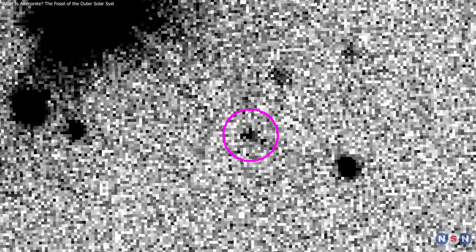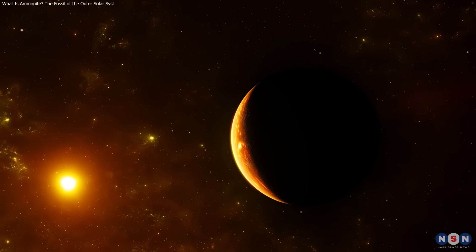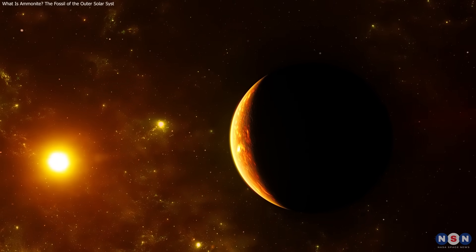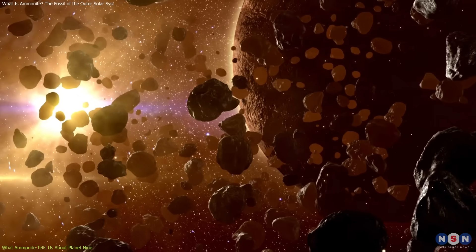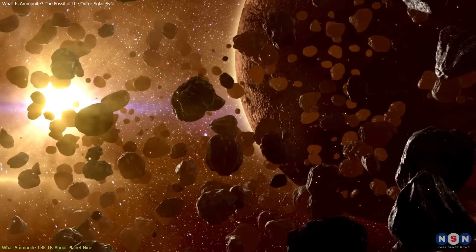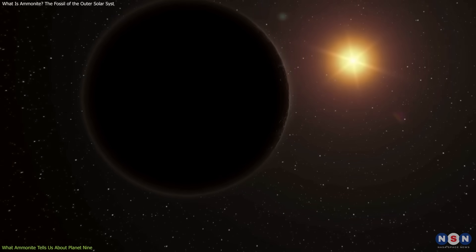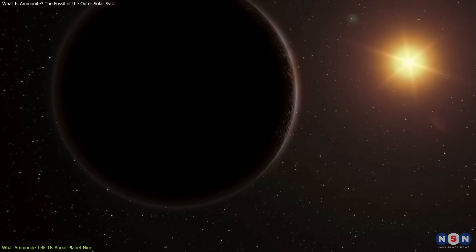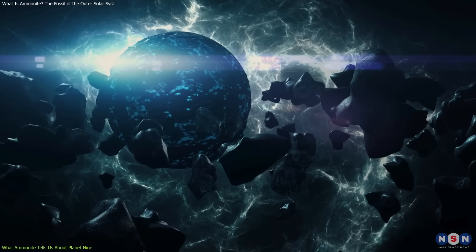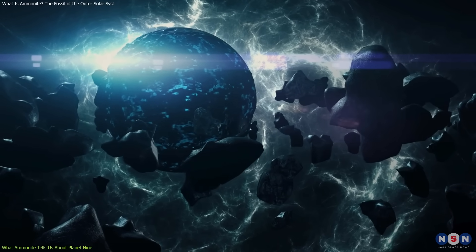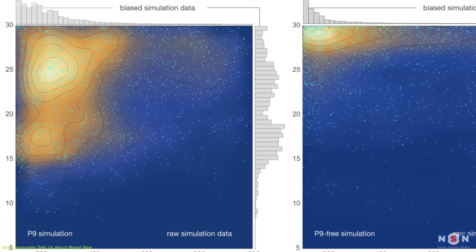The discovery of Ammonite reopens a debate that has captured the attention of planetary scientists for nearly a decade—the Planet 9 hypothesis. The theory proposes that a large, yet undetected planet, somewhere between 5 and 10 Earth masses, is lurking in the outer solar system. Its presence has been used to explain why several distant objects appear to be gravitationally aligned. That is, their orbits are clustered in a way that doesn't seem random.